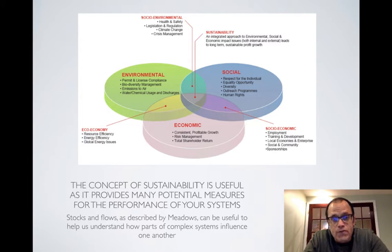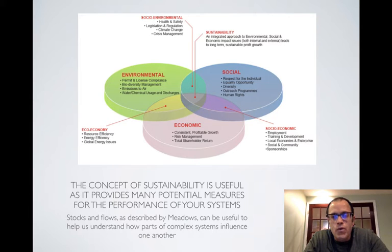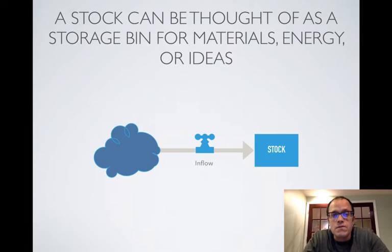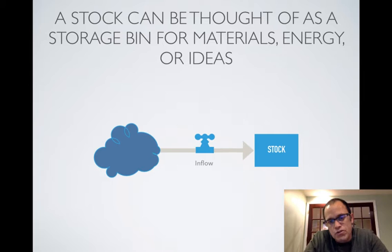If you haven't read Meadows, it's really important that you do. The second half of that chapter is a great overview on the way different measures and different stocks can be influenced by different types of variables. So let's look at it from this way — think about a stock. A stock is a place that we store things.